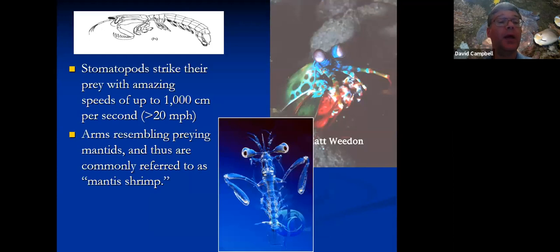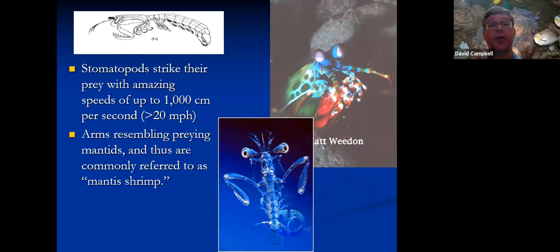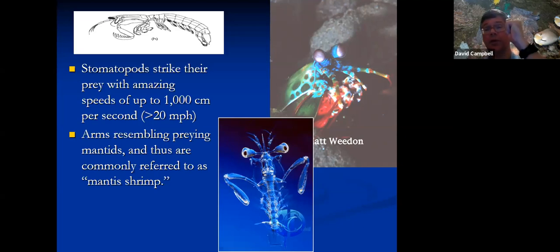These are mantis shrimp. Many of them have limbs that are similar to those of a praying mantis for the same reason — those are for grabbing and stabbing prey and are able to move very quickly. Some, instead of the stabbing approach, have a more massive club-like end to that limb, and they use that for smashing things like clams or crabs or other potential prey. That's not the best type to keep in your saltwater aquarium either — it can potentially crack the glass. Those actually use muscle strength to build up tension like stretching a rubber band, and then snap all at once to smash — that turns out to be some of the fastest movement of any animal.